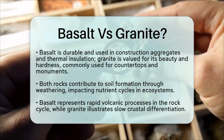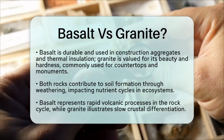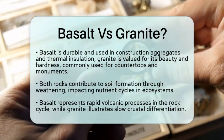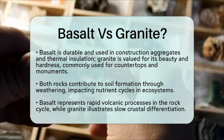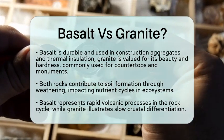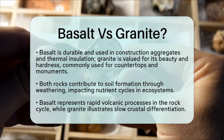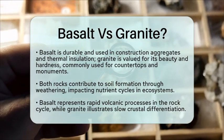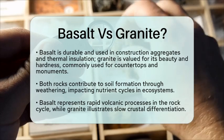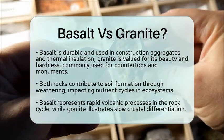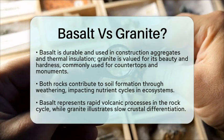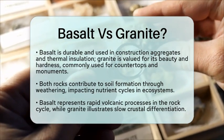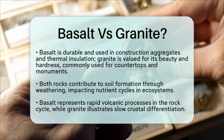In the context of the rock cycle, basalt represents rapid volcanic processes, while granite illustrates slow crustal differentiation. Understanding their formation helps us grasp concepts like plate tectonics and crustal recycling. So, basalt and granite are not just rocks — they are key players in Earth's geological story. Their differences in formation, composition, and uses highlight the diverse processes that shape our planet.